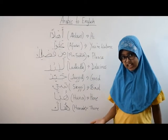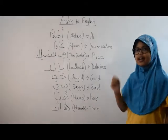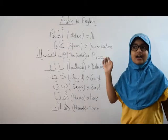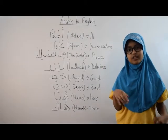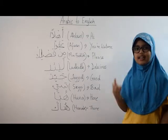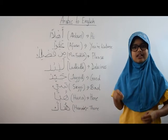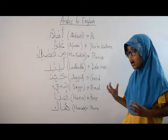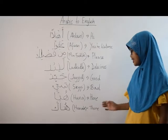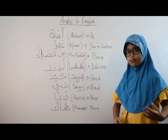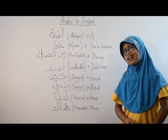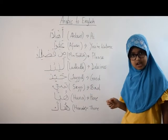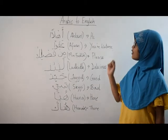So sayyee means bad — the weather is sayyee today means the weather is bad today. The next word is 'khuna', which means 'here'. For example, in a group project you might say: let's do the project khuna, meaning right here. And the last word is also 'khuna', but used for 'there' — let's do the project there.